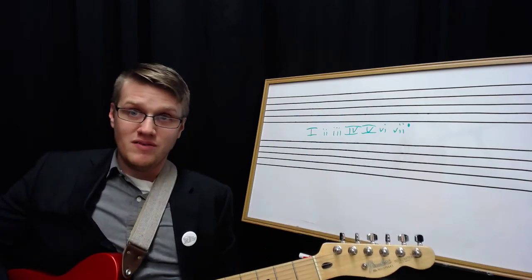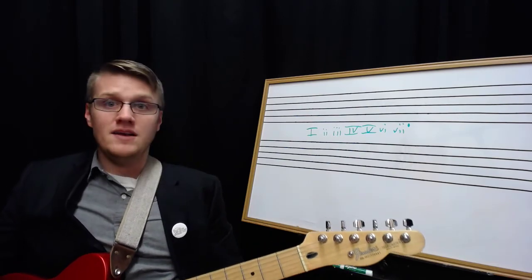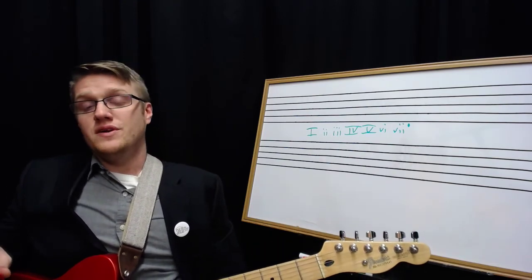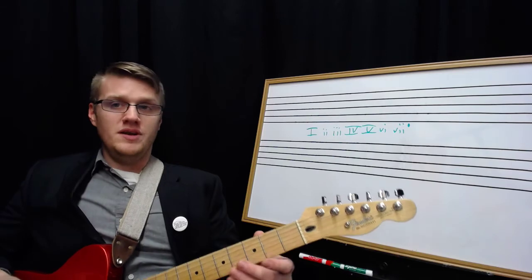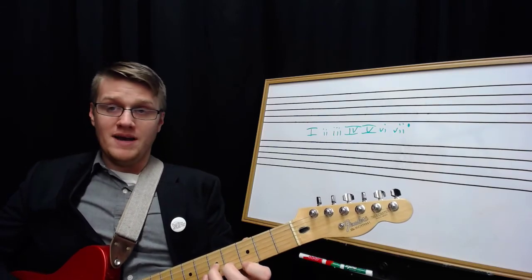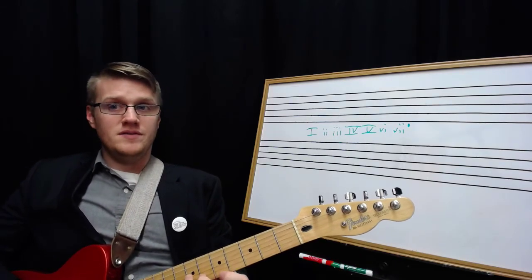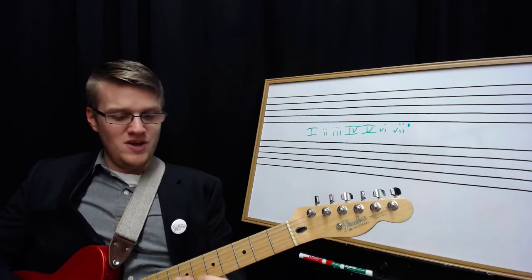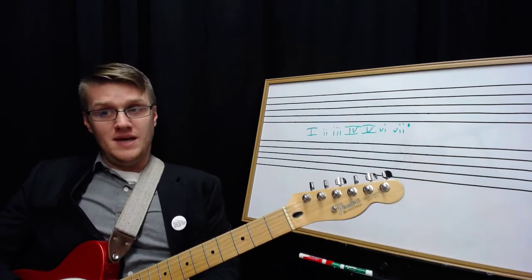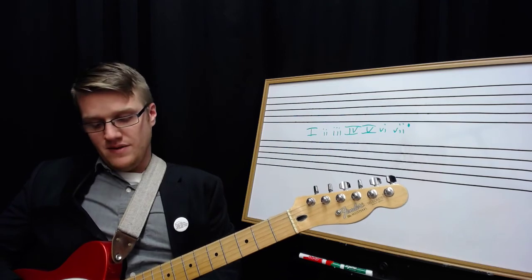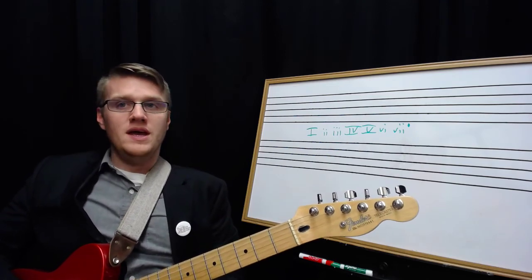Now do that in all 12 keys. Do that on all the string sets. Then you can start to do it through the different tonalities. So let's do it in melodic minor. One is minor. Two is minor. Three is augmented. Four is major. Five is major. Six is diminished. Seven is diminished. And then one is minor.